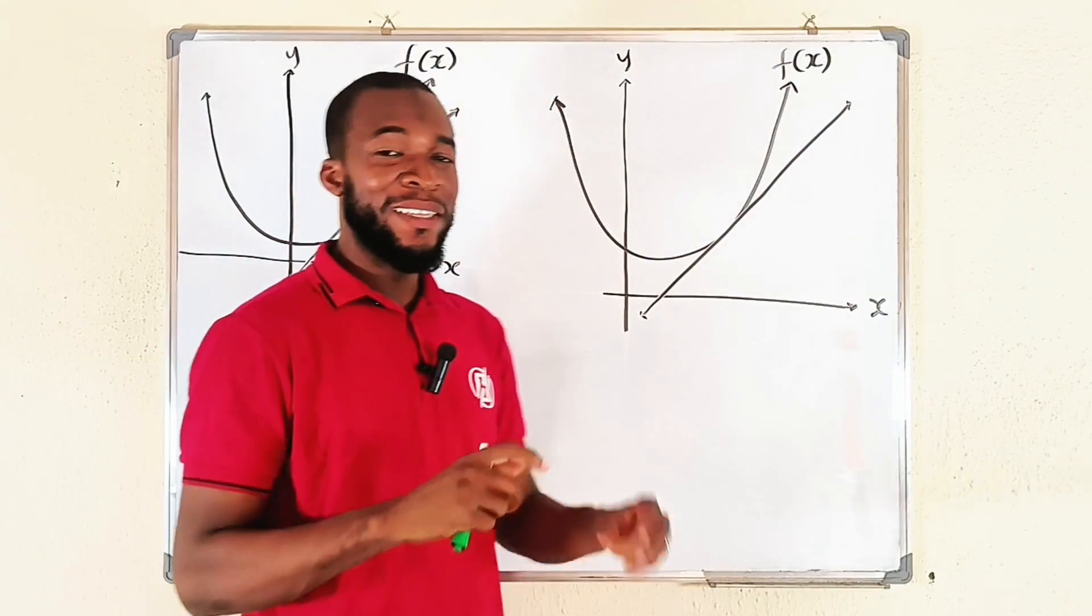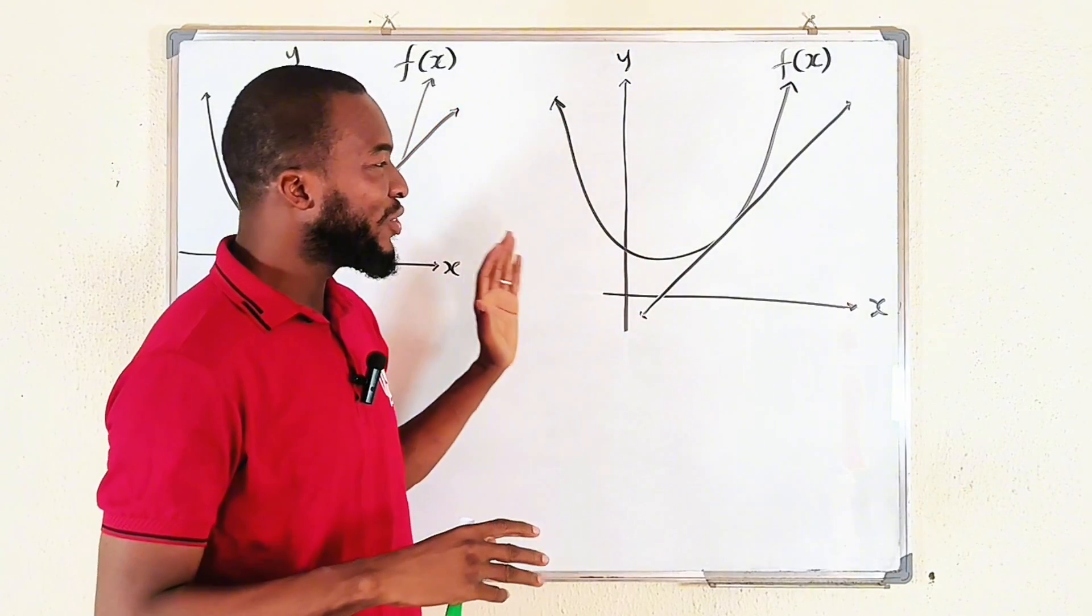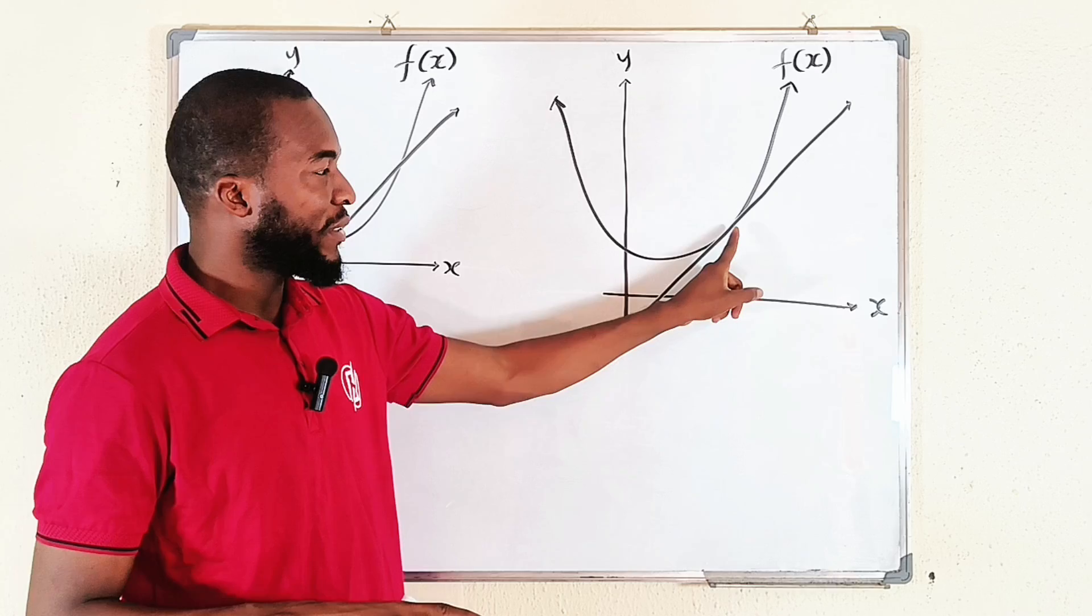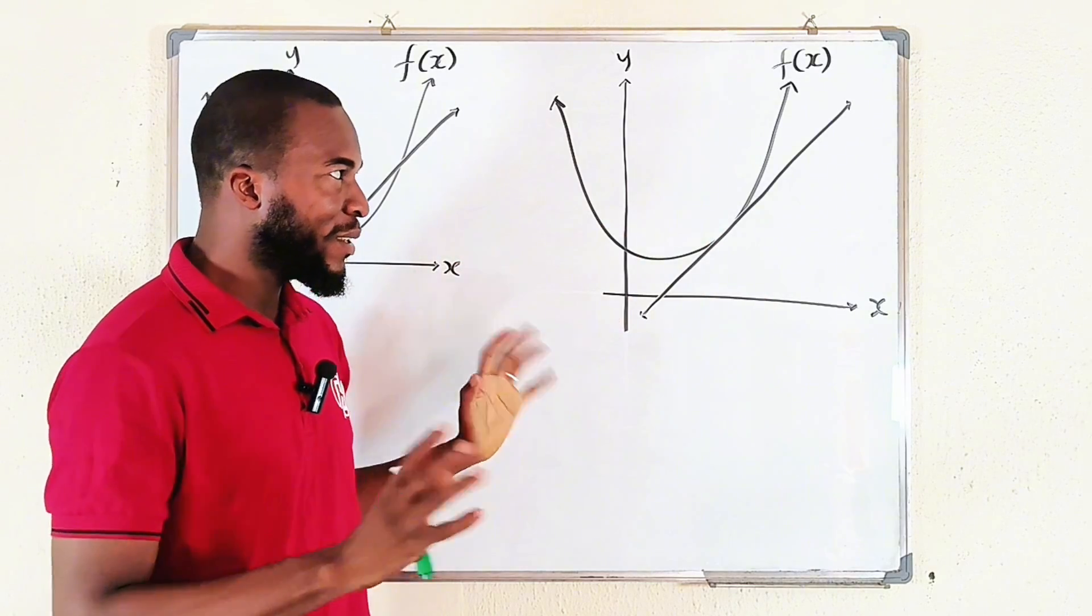While the tangent line only touches the curve at exactly one point. You see that? That's the difference between them.